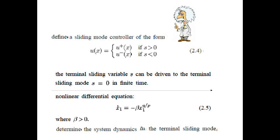Now let us define a sliding mode controller of the form given in equation 2.4. U equals U-positive, a function of X, if S is positive, and U equals U-negative, a function of X, if S is negative. The terminal sliding variable S can be driven to the terminal sliding mode in a finite amount of time — this is a key characteristic of terminal sliding mode control.